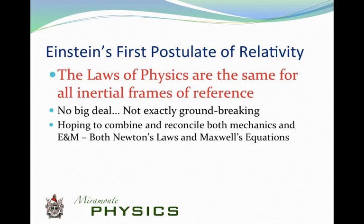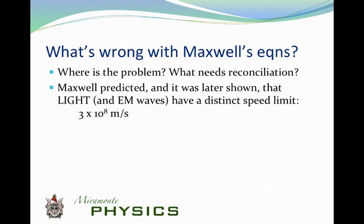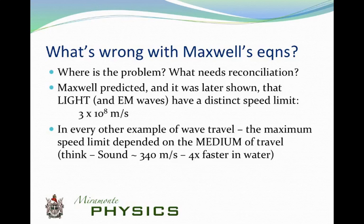Einstein was hoping to reconcile both the laws of mechanics and the laws of electricity and magnetism. Maxwell's equations weren't consistent with Newton's laws. Maxwell predicted, and it was later shown, that light — an electromagnetic wave — has a distinct speed limit of 3 × 10⁸ meters per second. It does not go any faster than that. It may go slower through an optically dense medium like water or air, but it will not exceed 3 × 10⁸ meters per second.